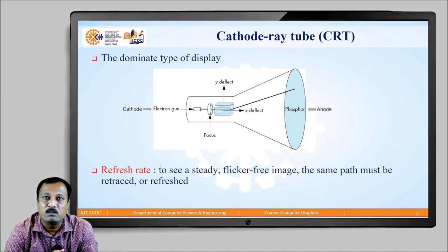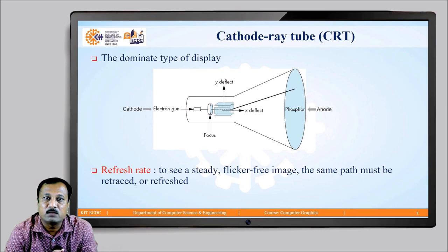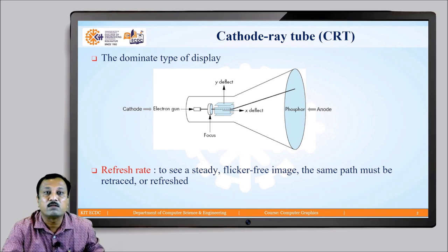The electron beam is directed towards the required position on the surface of the CRT with the help of horizontal and vertical deflectors along the x-axis as well as the y-axis. To see a steady, flicker-free image, the same path must be retraced or refreshed. The rate at which the path is refreshed or retraced is called the refresh rate of the CRT display device.